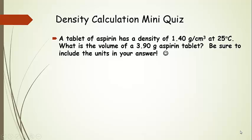So try it again. Here's another little mini quiz. This time you have the density of 1.40 grams per cubic centimeter of an aspirin tablet. And we don't care about the temperature. That's just given in the problem, because that's its density at that temperature. And we want to know what is the volume of this 3.90 gram aspirin tablet. So go ahead and try it.